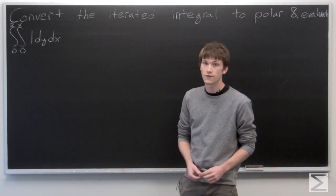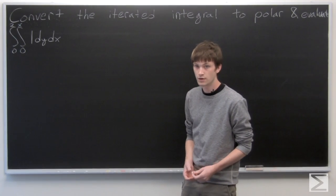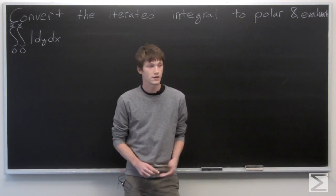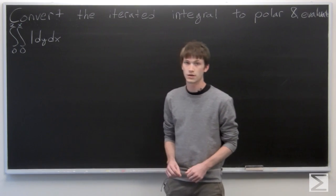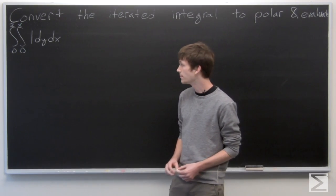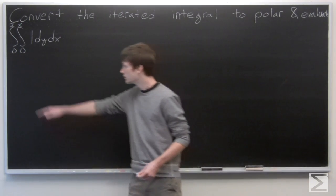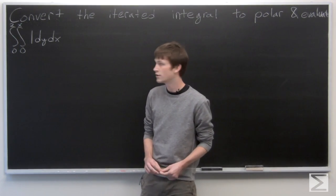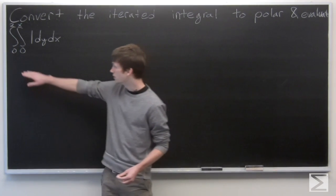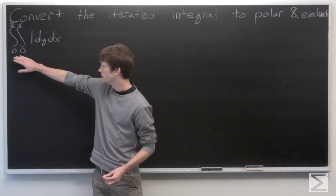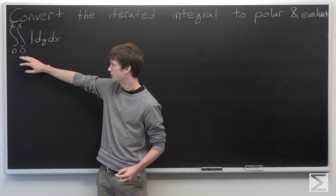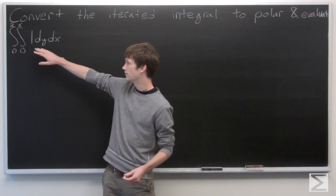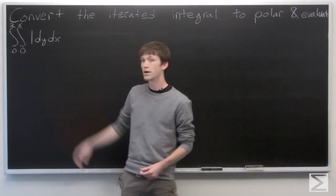In this problem, we're asked to convert the iterated integral into polar coordinates and then evaluate the newly created iterated integral. We're given an iterated integral in Cartesian coordinates: the integral from 0 to 2 and the integral from 0 to x of 1 dy dx.